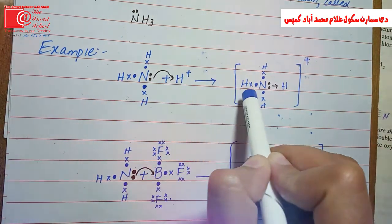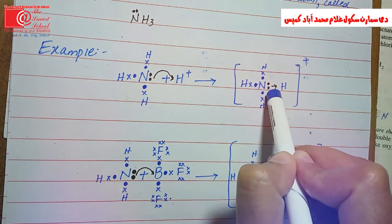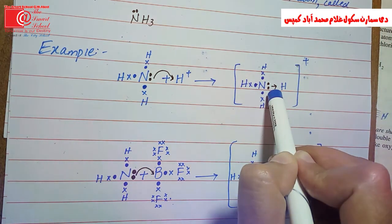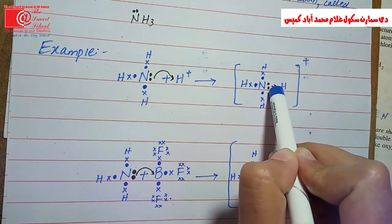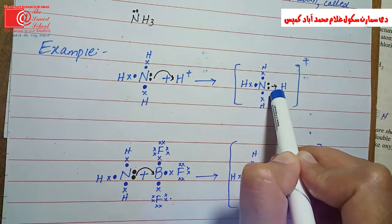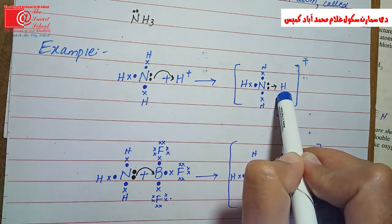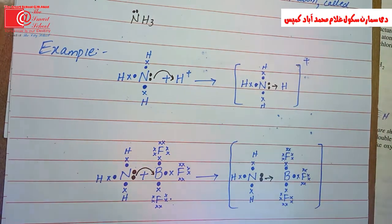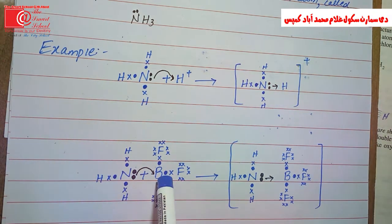Here a bond is formed, and a small arrow is used to show the coordinate covalent bond. The head of the arrow points toward the acceptor atom. For example, we show this for ammonia — the lone pair is shared from the donor atom.